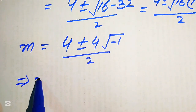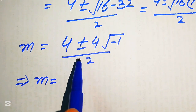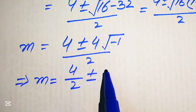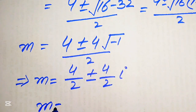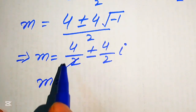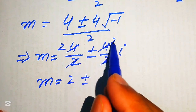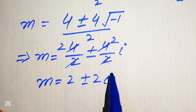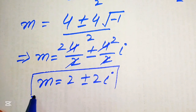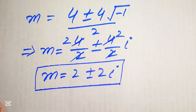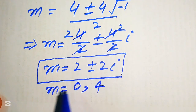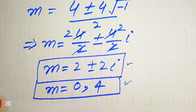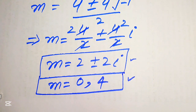Breaking the fraction: 4 over 2 is 2, and 4 over 2 is 2. Since the square root of minus 1 equals i (iota), the complex roots are m equals 2 plus or minus 2i. Combined with the real roots m equals 0 and m equals 4, these are the four roots of the given equation. Thank you for watching — please subscribe for more videos.